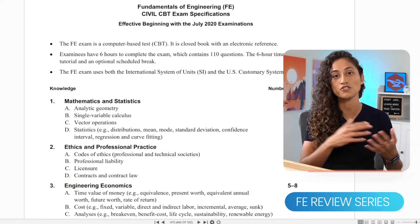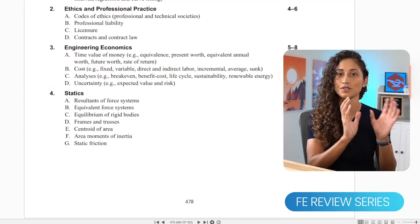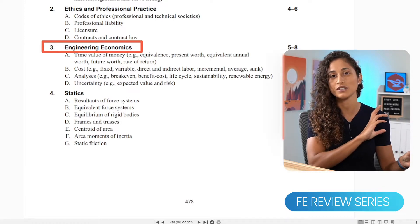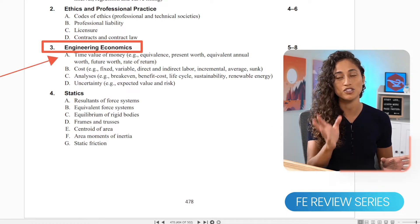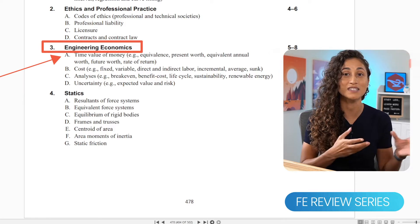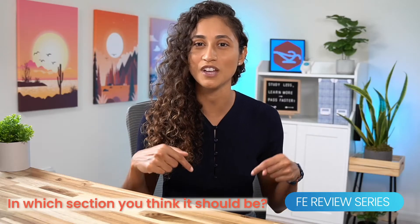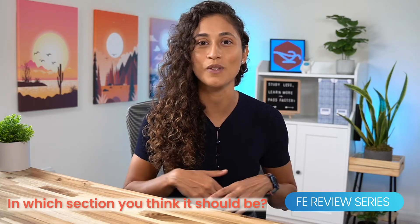In today's video, I will be covering the engineering economics problem. If we take a look at the specifications, there is really no section for depreciation. So this could either go under part A, which is time value of money, or maybe part C, analysis. Let me know your thoughts on this in the comment section below. Depreciation equations are on the reference handbook and we must know it for the FE exam. So let's dive in.